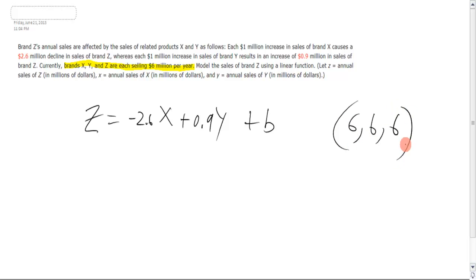So we can use this, or ordered triplet excuse me, we have three values so it's a triplet. We can use this to find our B. So we sub in and we know 6 is equal to negative 2.6 times 6 plus 0.9 times 6 plus B.